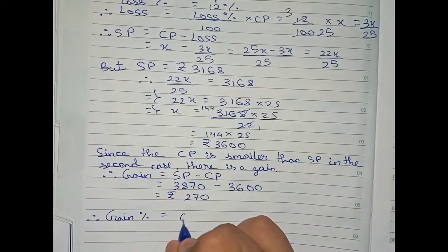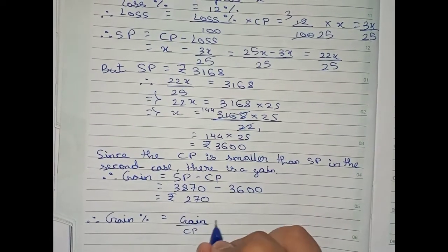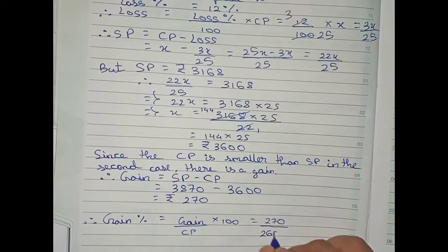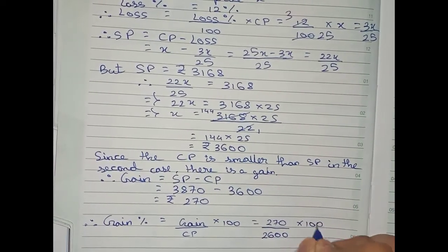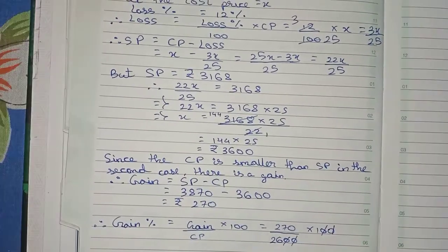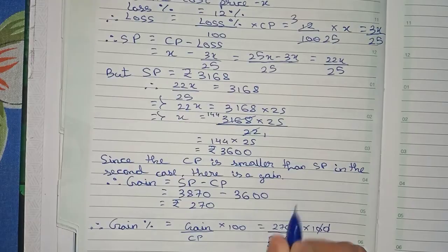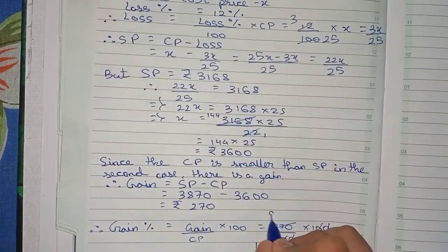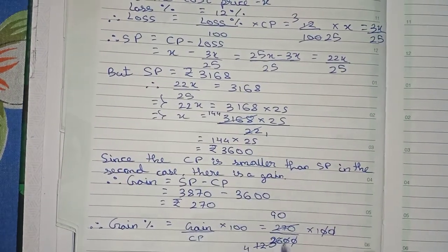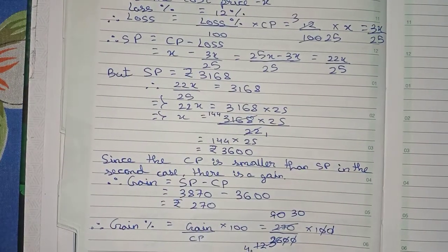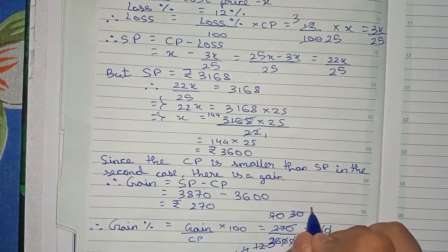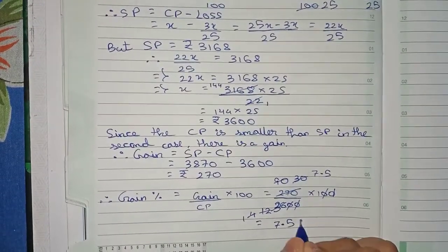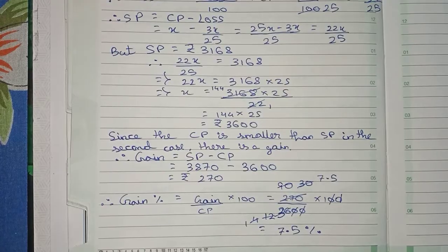Now we find the gain percentage. The formula is: gain percent equals gain by CP into 100. Our gain is 270 and CP is 3600. We simplify by cutting 270 and 3600 — dividing 270 and 36 by 3 gives 90 and 12, then further simplifying gives 7.5. So the gain percent equals 7.5%, which is our final answer.